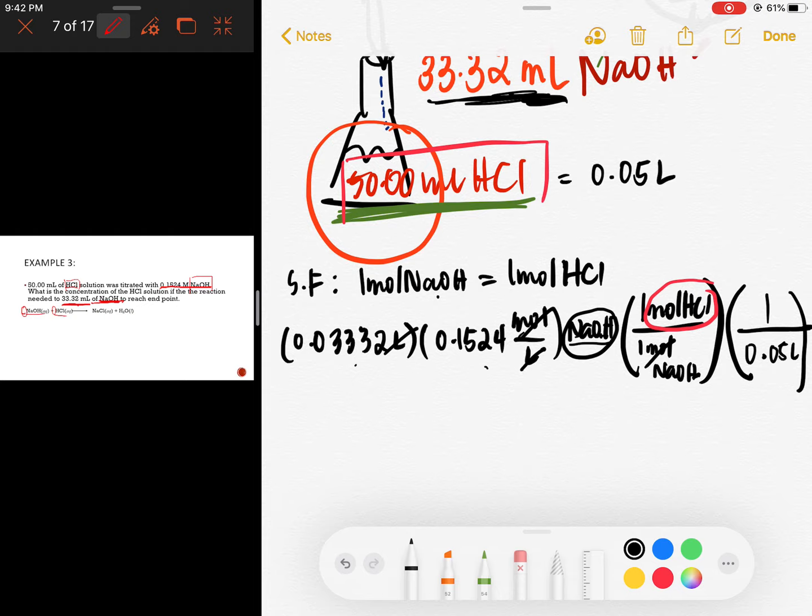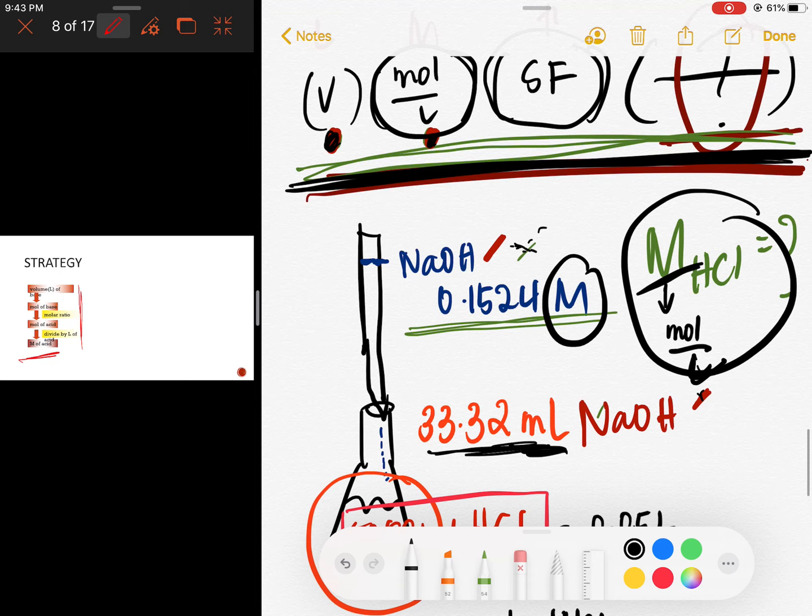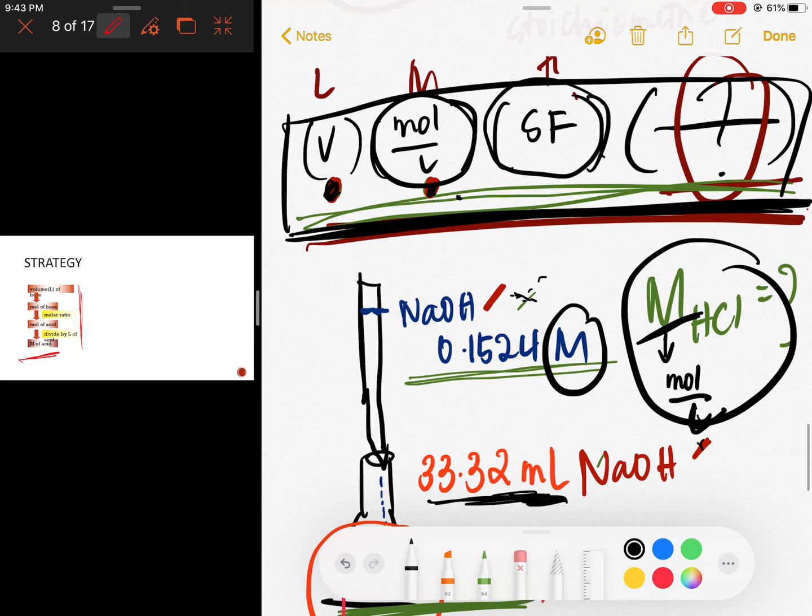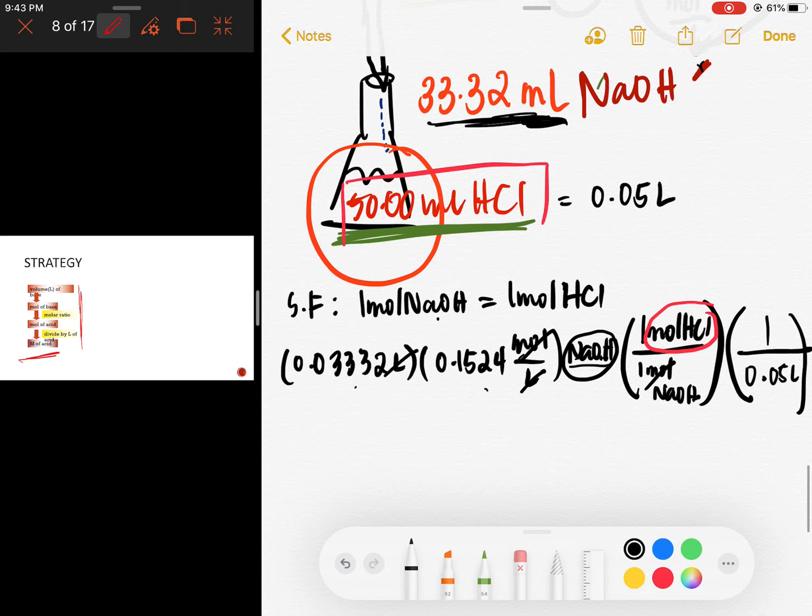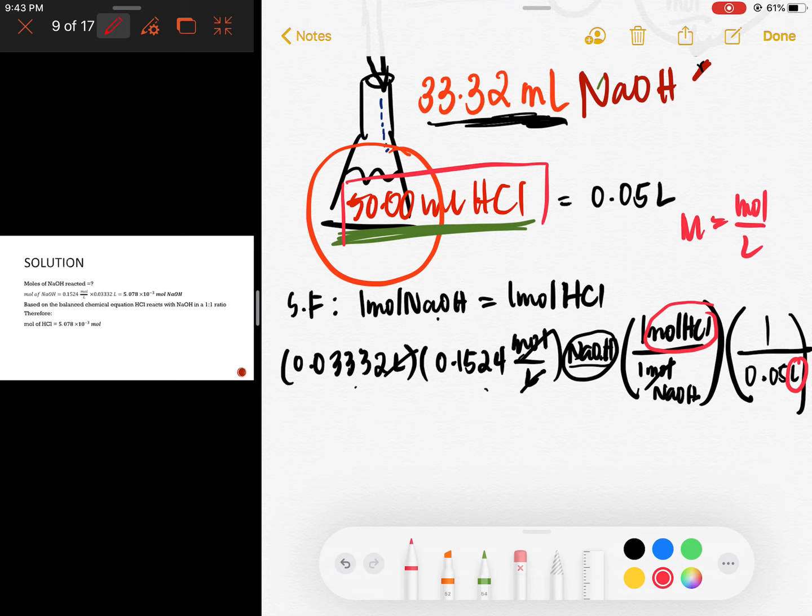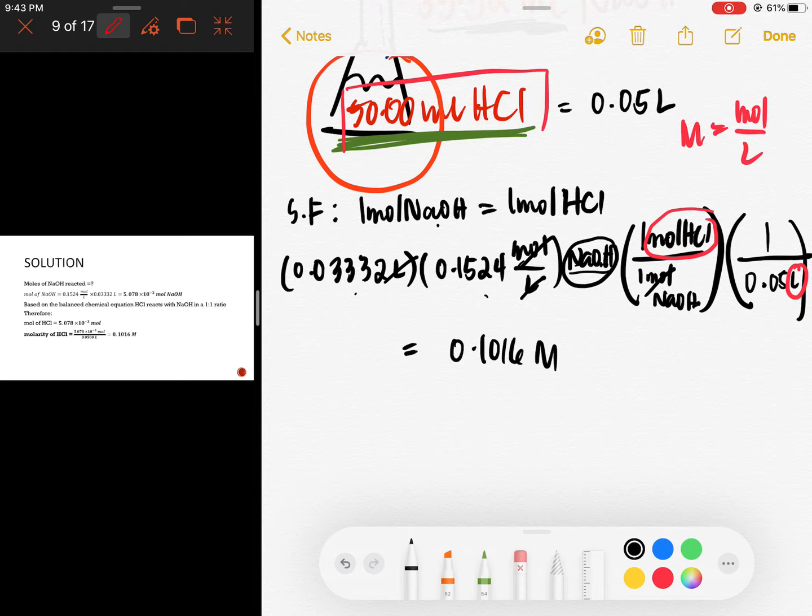This is the entire computation. Just press this on the calculator. 0.0332 times 0.1524 times 1 divided by 1 divided by 0.05 liter. This is actually another strategy, but you might get confused if I teach that. Technically, this format is the same. Let's just follow this format so it's faster. Volume, mole per liter, stoichiometric factor, then whatever you're looking for. Here, what are we looking for? We're looking for molarity of hydrochloric acid. That's why mole per liter. Because molarity is mole per liter. This would be the solution. When we press this on the calculator, the answer would be this one. The molarity would be equal to 0.1016 molar. Whose molarity is this, whose mole is this? Hydrochloric acid.